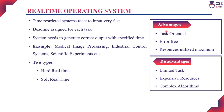The advantages of real-time systems: these are task-oriented systems that must execute the task within the specified time, without any error, within the time limit. Resources will be utilized to the maximum. Disadvantages: since it is a time-restrictive system, only a limited number of tasks can be executed with these systems. The resources required for these real-time operating systems are expensive, and complex algorithms are needed to execute the task.